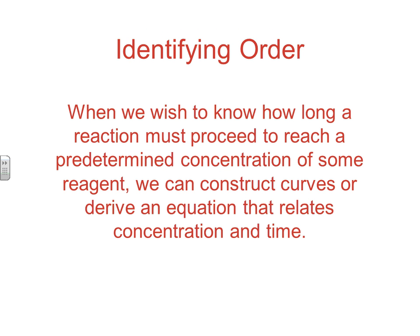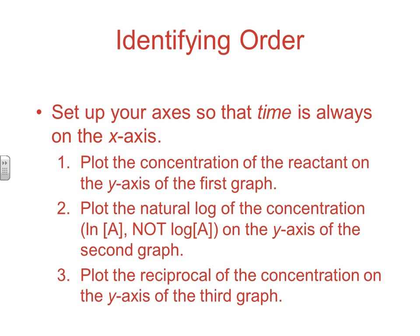To identify the order, the key is we're looking for linear. If we want to know how long a reaction must proceed to reach a certain concentration, we need to know what order it is, then use the right integrated rate law equation. Set up three graphs — your graphing calculator can really speed this up, or you can use Excel — with time always on the x-axis.